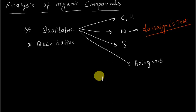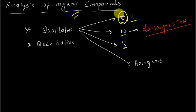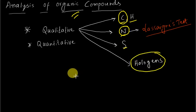Whenever we talk about analysis of organic compounds, there are two kinds: qualitative and quantitative. Qualitative means you identify whether elements — carbon, hydrogen, nitrogen, sulfur, or halogens — are present in the compound. Quantitative means you calculate the percentage of carbon, nitrogen, or a certain halogen present in the organic compound you are testing.